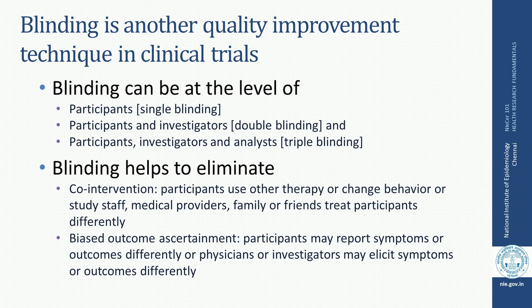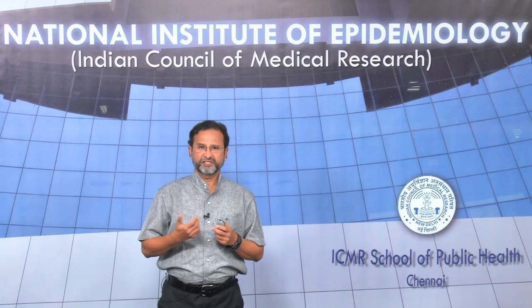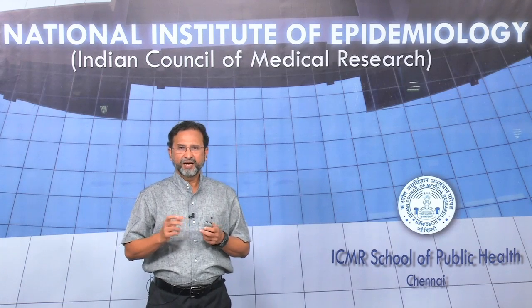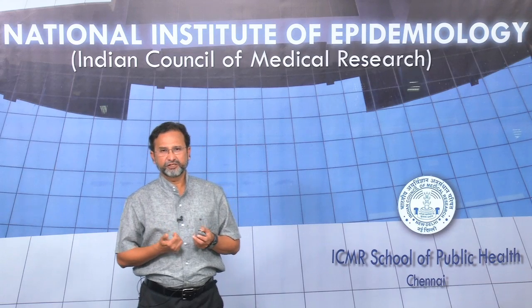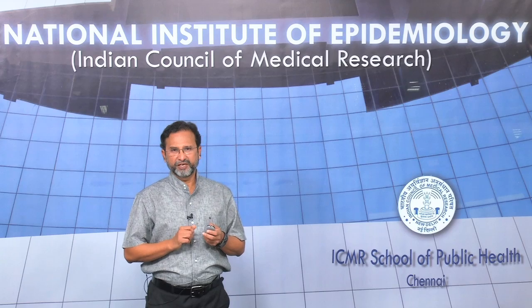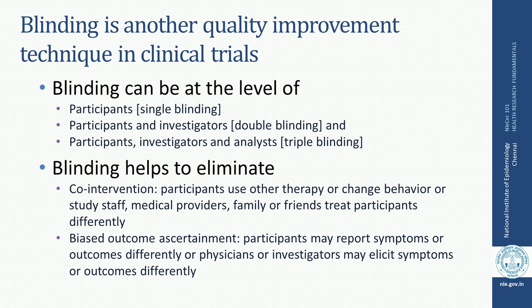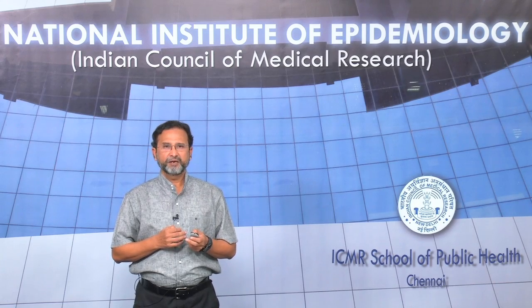There are two problems that generally arise. One is co-intervention: if participants realize that one group is getting a particular drug and the other is getting a different drug, they may try to exchange or decide something between themselves, sometimes facilitated by study staff, medical providers, family, or friends. This co-intervention can vitiate the results of the study, and blinding helps eliminate that. Also, if a participant knows what they are getting, they might exaggerate minor effects with a new drug or underreport effects with standard treatment. Similar bias may occur in those evaluating the participant, and blinding helps minimize these biases in outcome ascertainment.